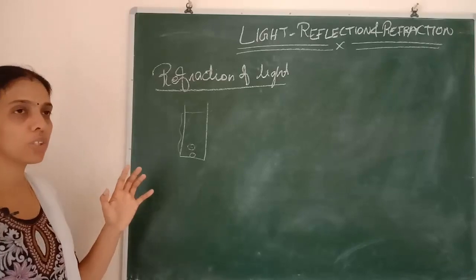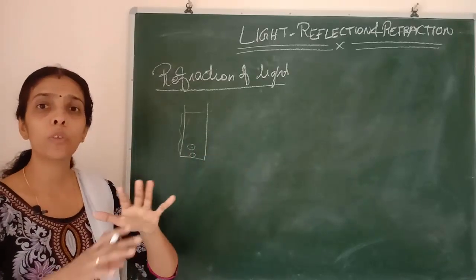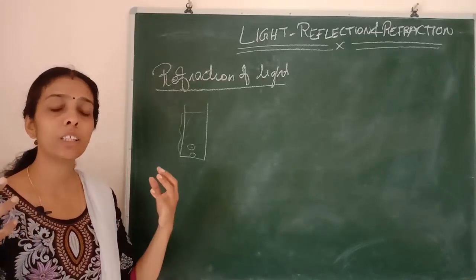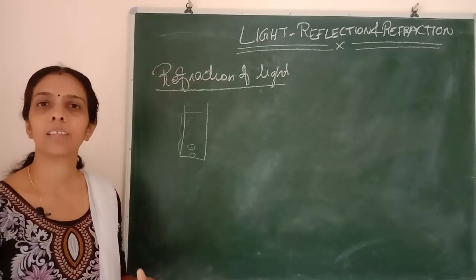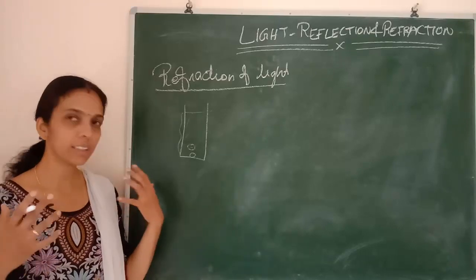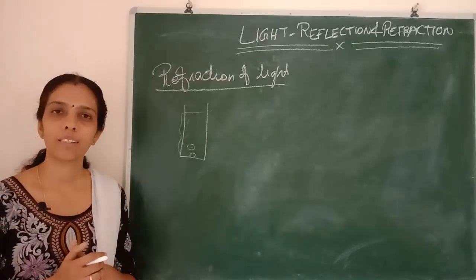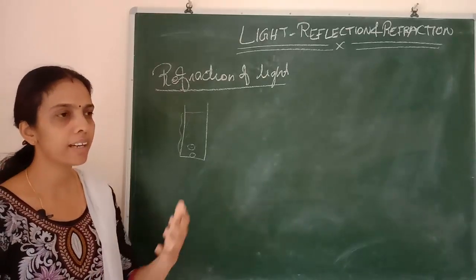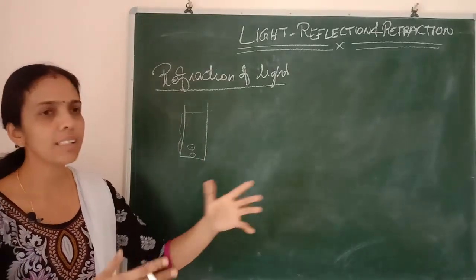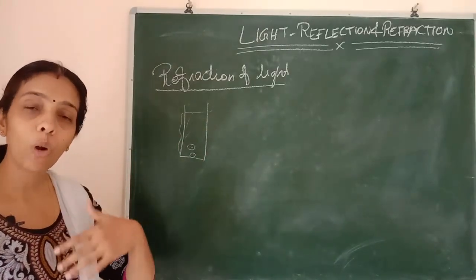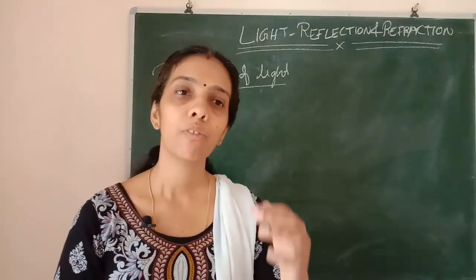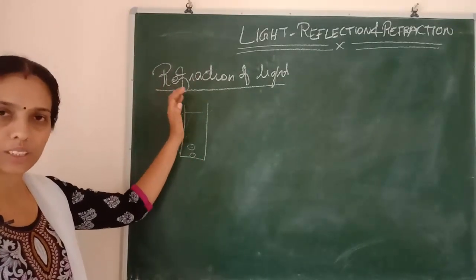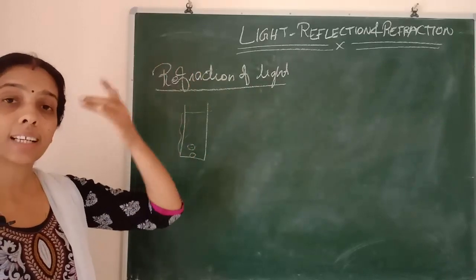Maybe if we are outside a room and inside the room it is full darkness, can we see any objects inside that room? We can't see. Why? Because if we want to see an object, the light ray should fall on the object, reflect, and come to our eye. Then only we can see it.